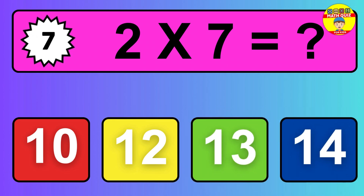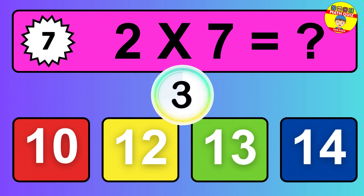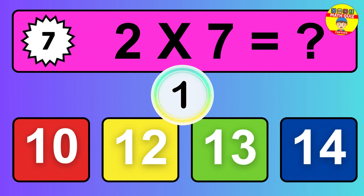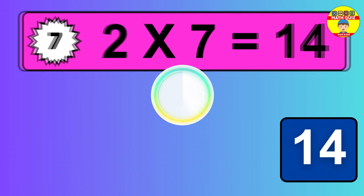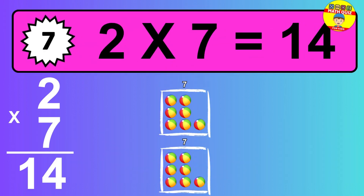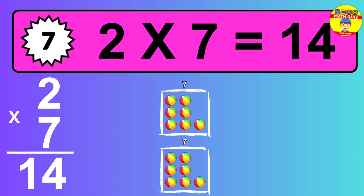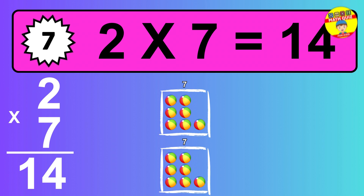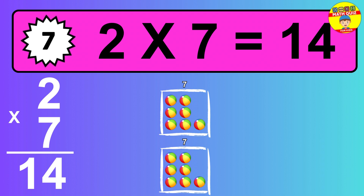Question 7. Two times seven equals what? So the answer is two times seven is fourteen. To calculate, we have two groups with seven balls each one. So how many balls do we have? Fourteen balls.